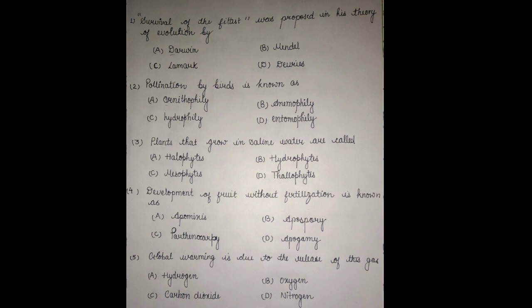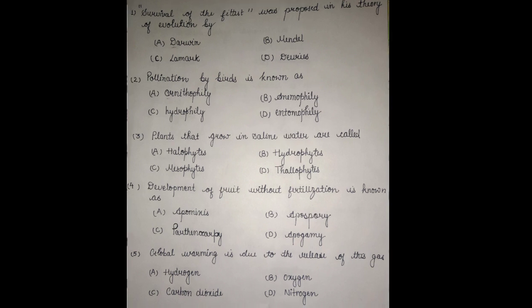The best known example of parthenocarpy is seen in bananas. A similar phenomenon in animals is called parthenogenesis — the development of a new organism without fertilization. Apomixis refers to the development of seeds without fertilization.